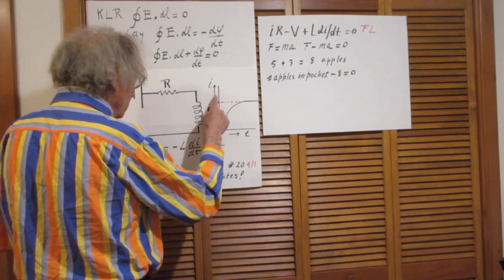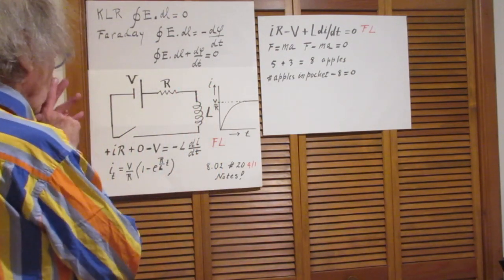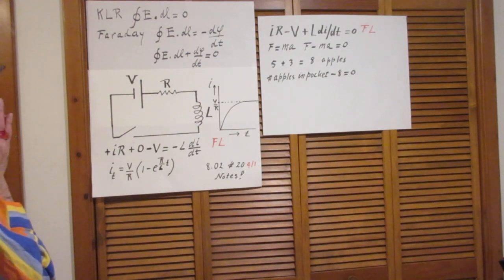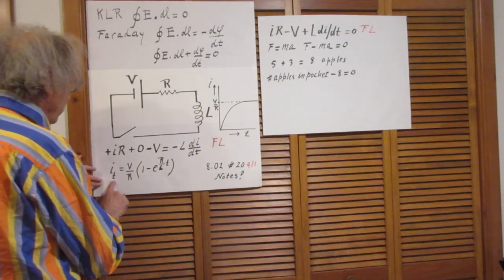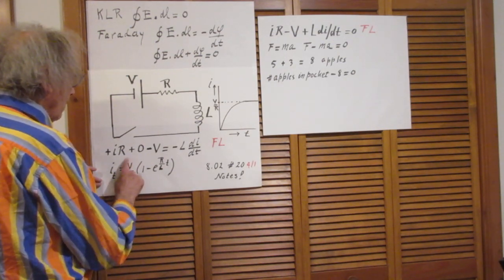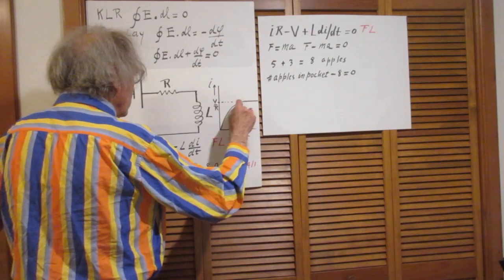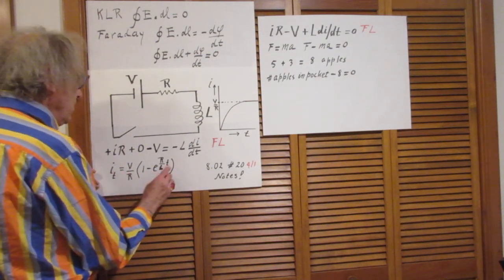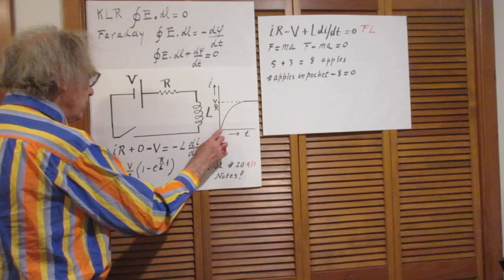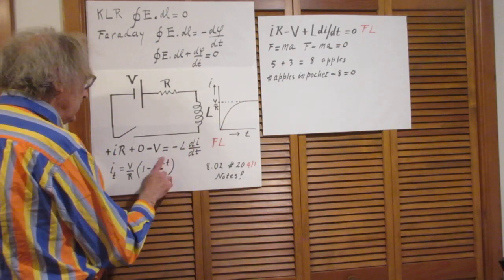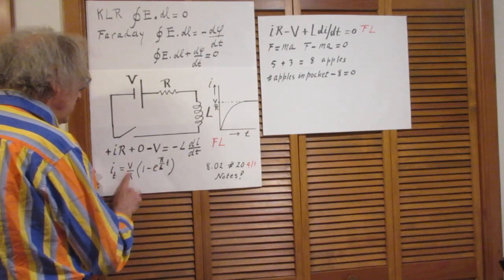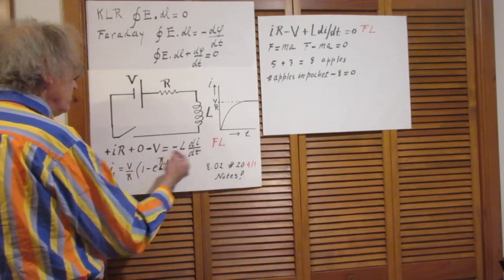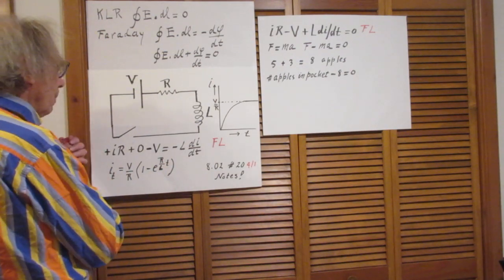So V equals IR, so I is V over R. Solve this equation as I do in my lecture 20. And you will find that I as a function of time is V over R, remember that's Ohm's law when the di dt is zero, times one minus e to the power minus R over L times t. When t is zero, this is one minus one, so the current is indeed zero. When t is very large, infinitely large, this term is zero. So the current is V over R and will remain V over R all the time.